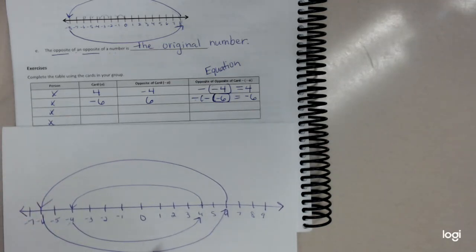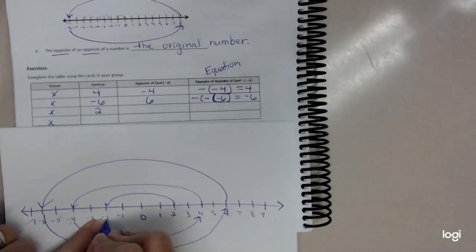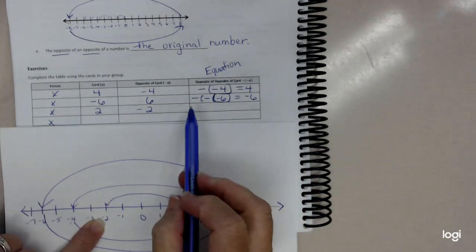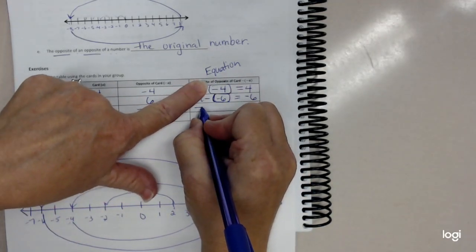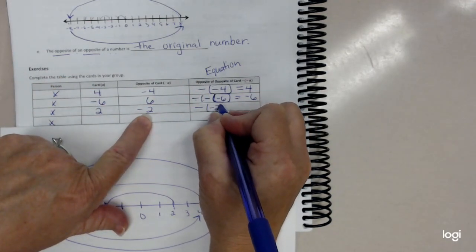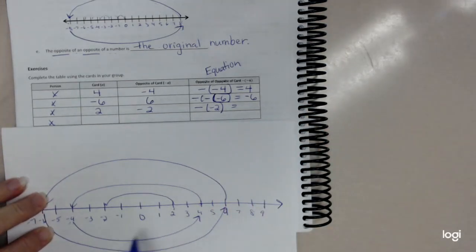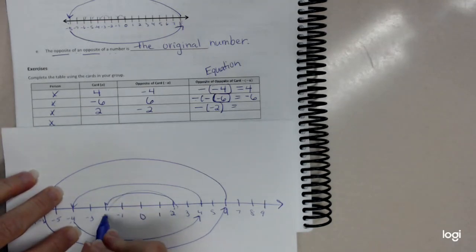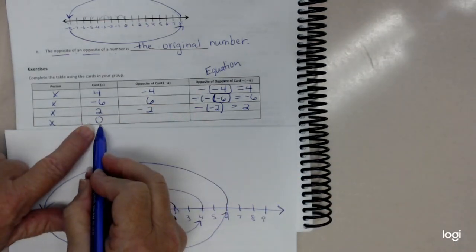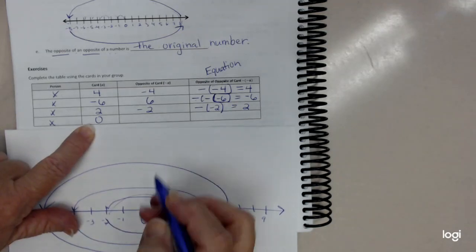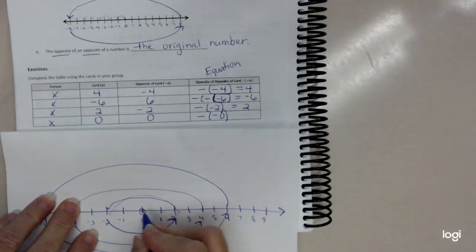Since my number line is getting a little crazy, let's do the number two. The opposite of two is negative two. The opposite of the opposite of two — my opposite was negative two, and the opposite of negative two is positive two. What about zero? The opposite of zero is zero, and the opposite of the opposite of zero would also be zero.